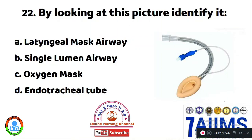Question 22: By looking at this picture, identify it. Option A: laryngeal mask airway. Option B: single lumen airway. Option C: oxygen mask. Option D: endotracheal tube. The image shown in this picture is Option A, laryngeal mask airway.